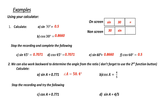What happens if we're given a fraction instead of a decimal? In that case, we would have to use brackets. So on an on-screen calculator, we would punch in second function cos, bracket, 4 divided by 5, close bracket, equals. On a non-screen, you would punch in 4 divided by 5, equals, second function cos. You should get an answer of angle A equal to 36.9 degrees.